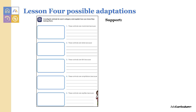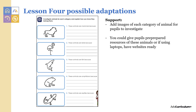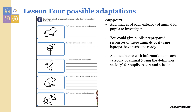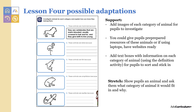In lesson four, pupils need to investigate an animal from each category and then explain how they know it belongs there. Support pupils by adding images of each category of animal for pupils to investigate. You could give pupils pre-prepared resources of these animals, or if using laptops, have websites ready. You could also add text boxes with information on each category of animal, using a definition activity for pupils to sort and stick in. Stretch pupils by showing them a picture of an animal and asking what category it would fit in and why.